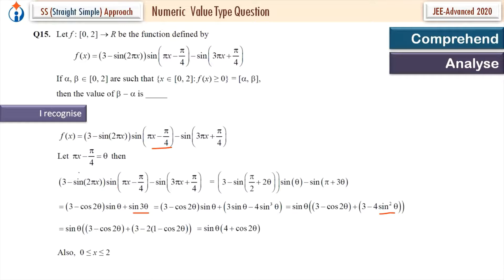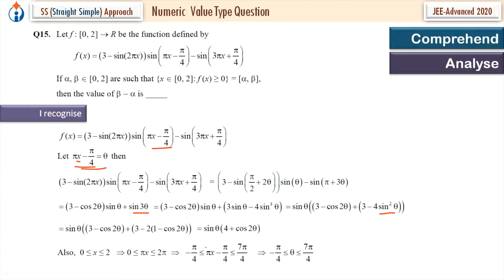As we have put this in terms of θ, x is from 0 to 2, closed interval. So πx ranges from 0 to 2π, and subtracting π/4 gives θ ranging from -π/4 to 7π/4. So θ is from -π/4 to 7π/4.